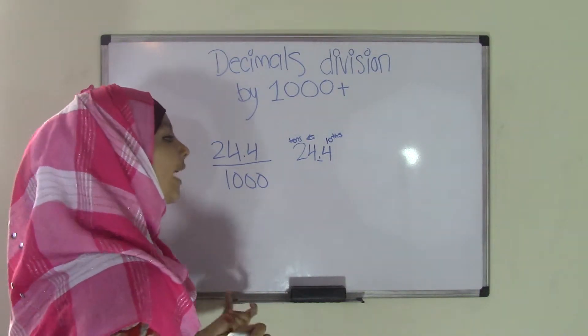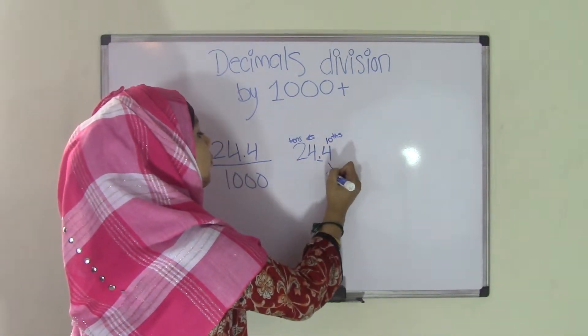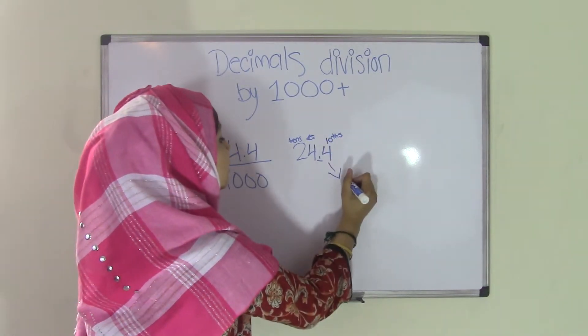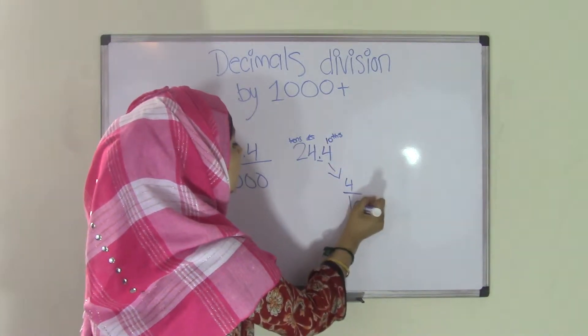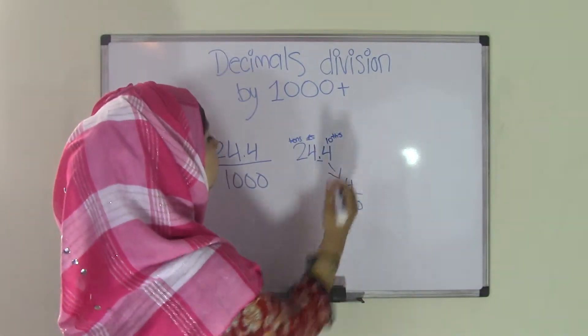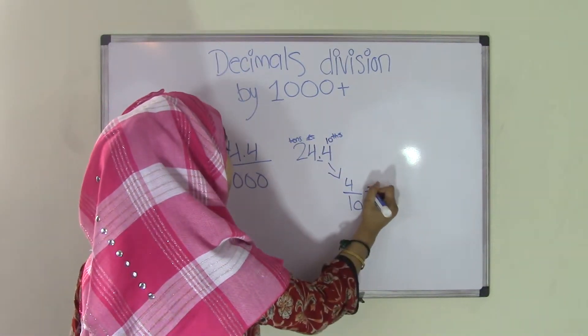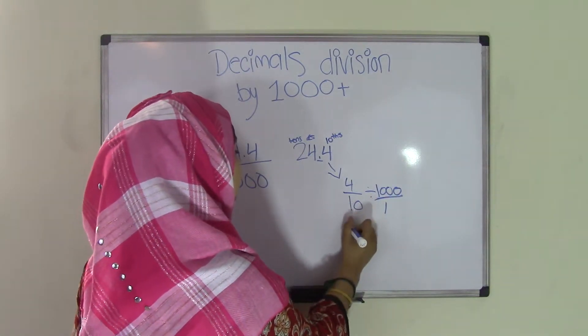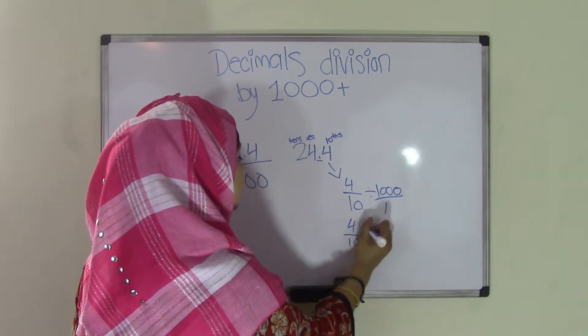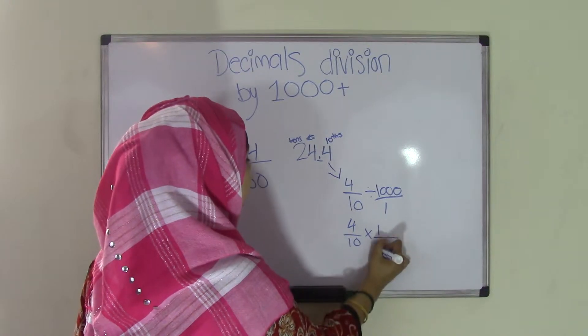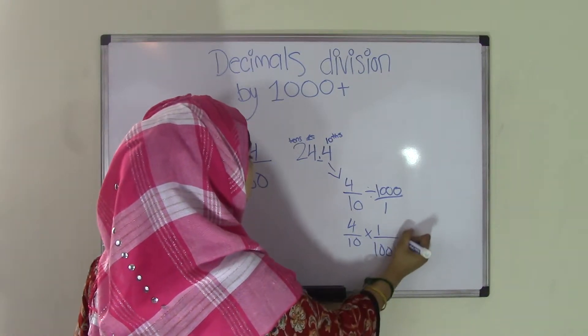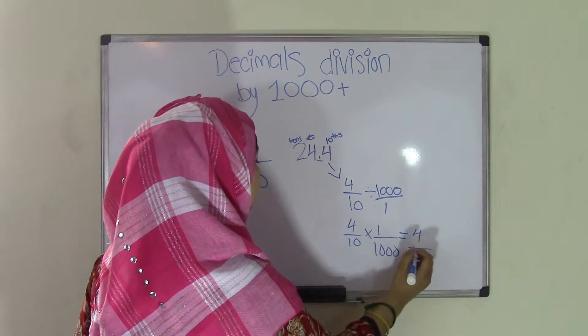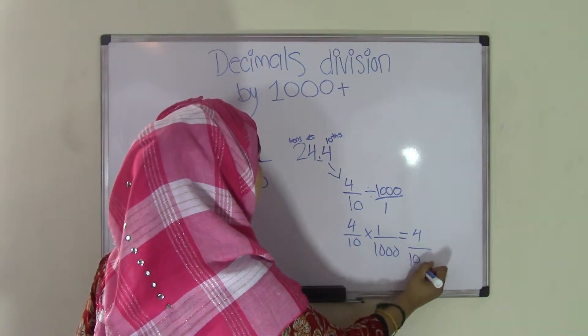what you're going to do is write them in fractions. First, let's start with the 4. The 4 over tenths would become 4 over 10 because the denominator is going to be the place value. 4 over 10 divided by 1,000 over 1. If you make a reciprocal, it will become 4 over 10 times 1 over 1,000. It will become 4 times 1 is 4, and 10 times 1,000 becomes 10,000.